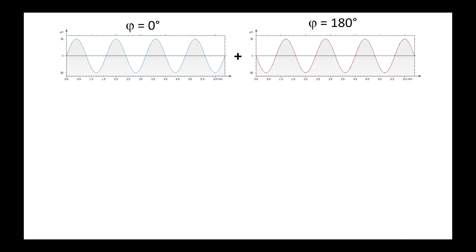So, if we sum two sinusoids of the same frequency and the same amplitude, one with a phase of zero degrees and the other with a phase of 180 degrees, we obtain a zero signal. This is the principle of noise cancelling headphones.